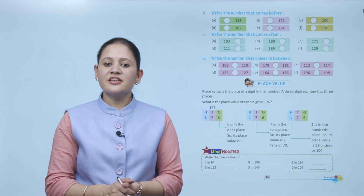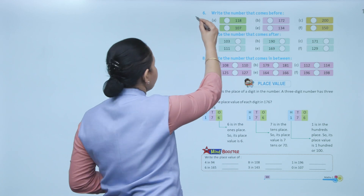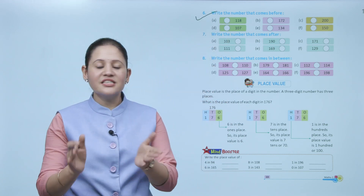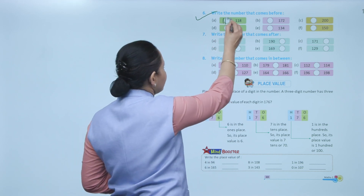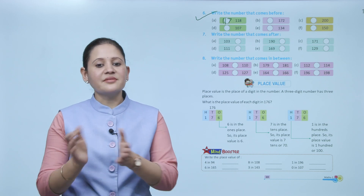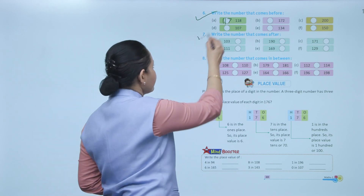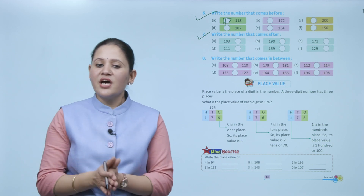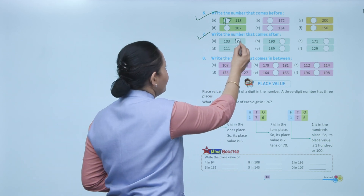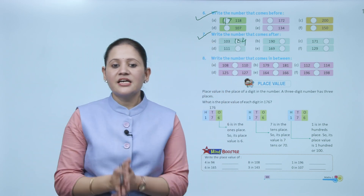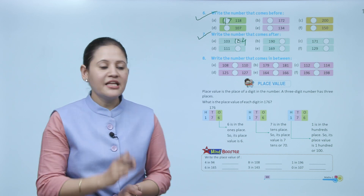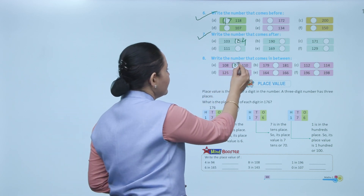Next: write the number that comes before — what comes before 118? That is 117. So write 117. Next: write the number that comes after — the number is 103, what comes after 103? That is 104. Next: write the number that comes between — what comes between 108 and 110? That is 109. Clear.